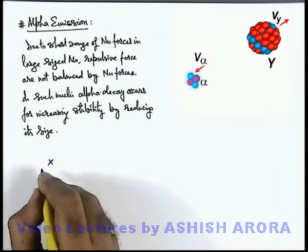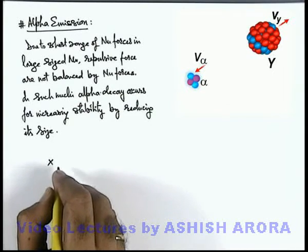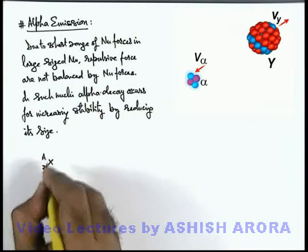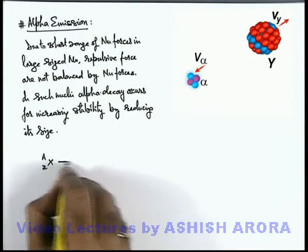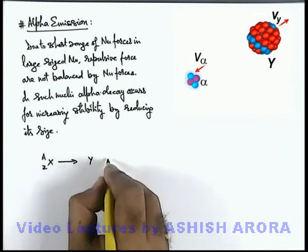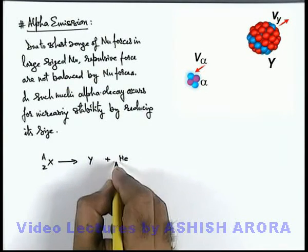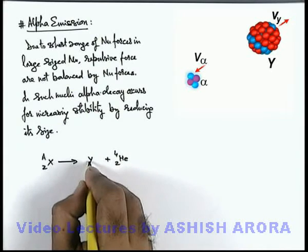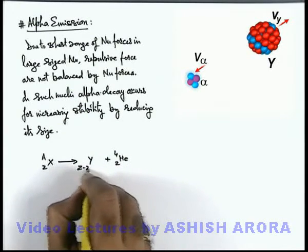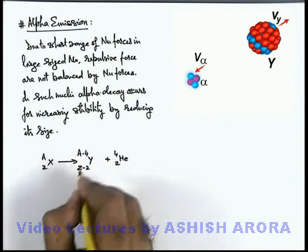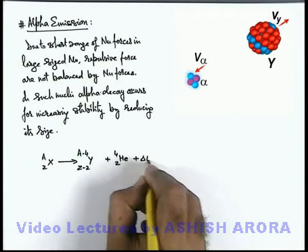Now in this situation, if we talk about the reaction, the reaction can be written as: if this is the radionuclide X with Z and A as atomic and mass number, it splits to Y and alpha particle. Alpha particle is the helium nuclei, 2, 4, and here Y will be Z minus 2 and A minus 4, and some energy is released.